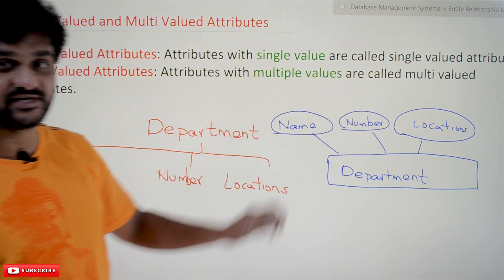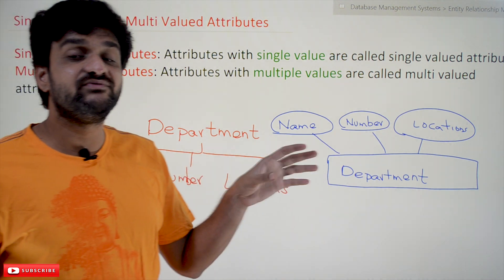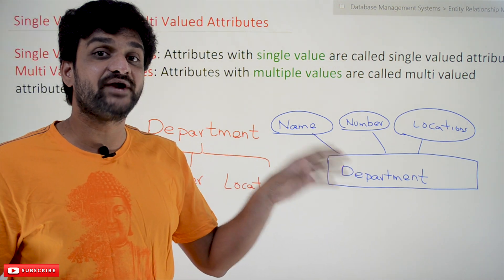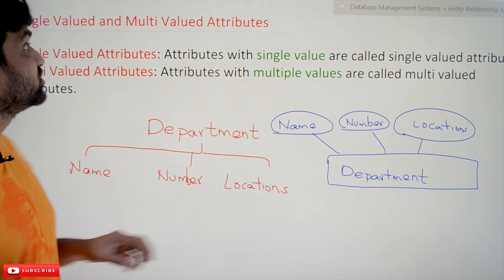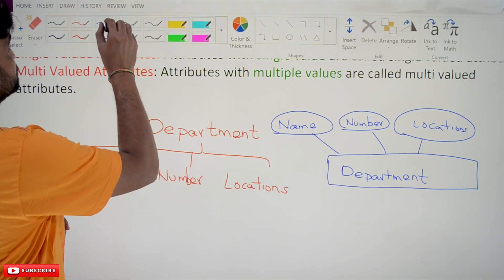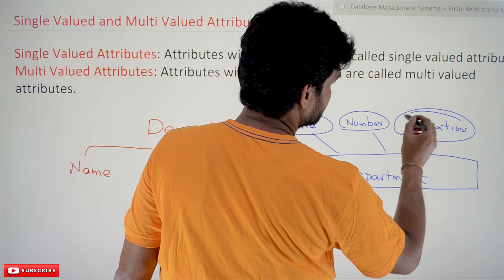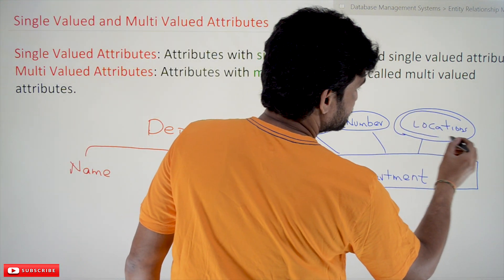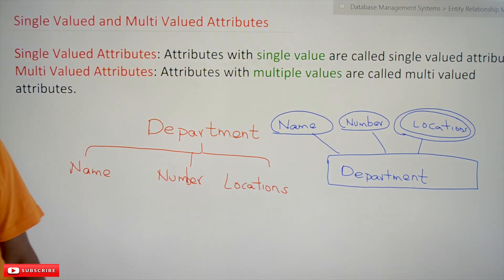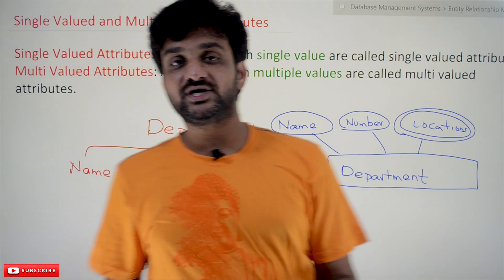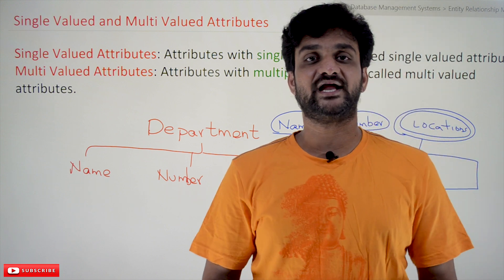Single valued attributes are represented in a regular oval shape in ER diagrams. Multi valued attributes are represented in a double oval shape. That is how multi valued attributes are distinguished. This is all about single valued and multi valued attributes — hope you got clarity on this concept.